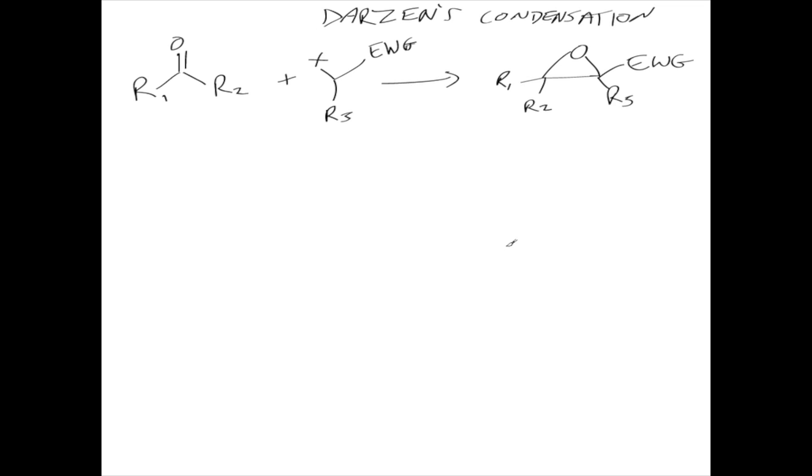Okay, we're going to have a look at Darzens condensation or Darzens reaction. This is a very simple reaction for making epoxides. Basically, we take a ketone with R1 and R2 as alkyl groups, and this species here where X is a halogen and we've got an electron withdrawing group, and add some base.